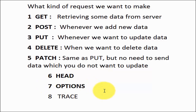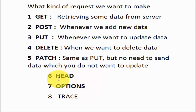Next is OPTIONS. Whenever we hit any API, how do we know what kind of methods that API supports — can we use GET, POST, PUT, DELETE? We use the OPTIONS method, and in the response we will get all the methods we can use while hitting that particular API. So OPTIONS tells us which methods are supported when hitting any API.